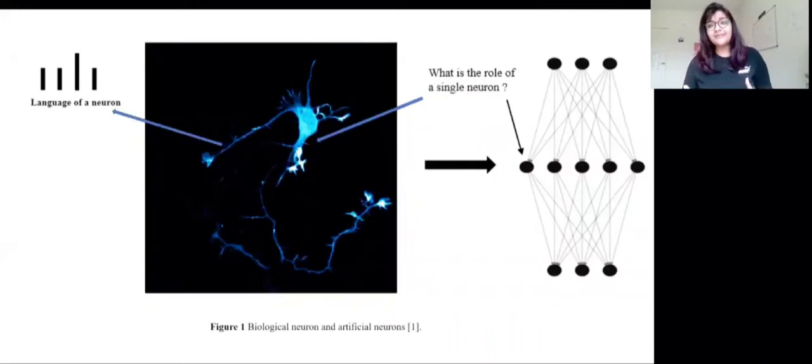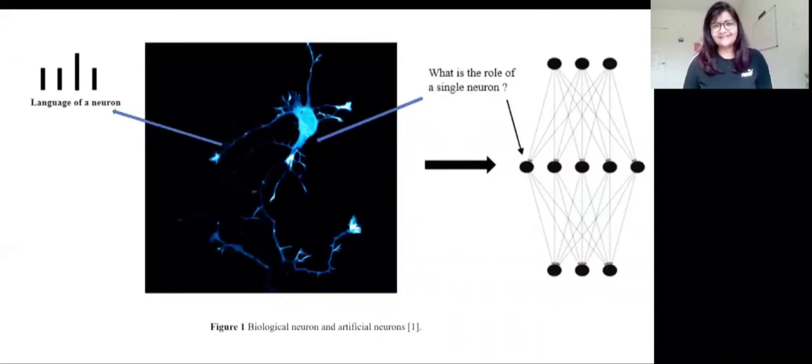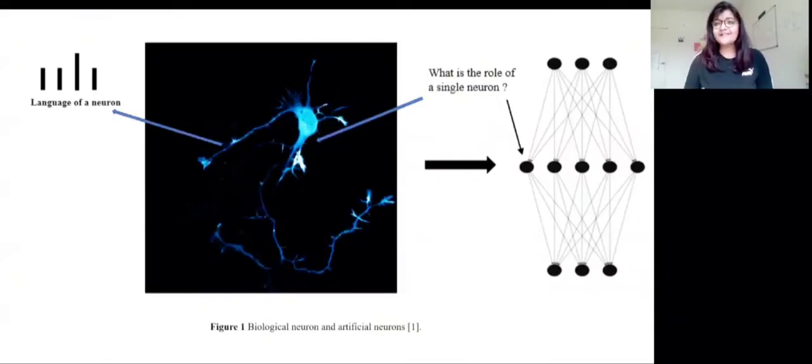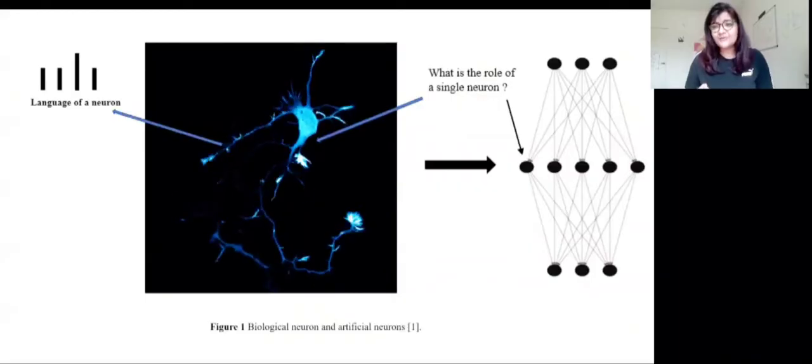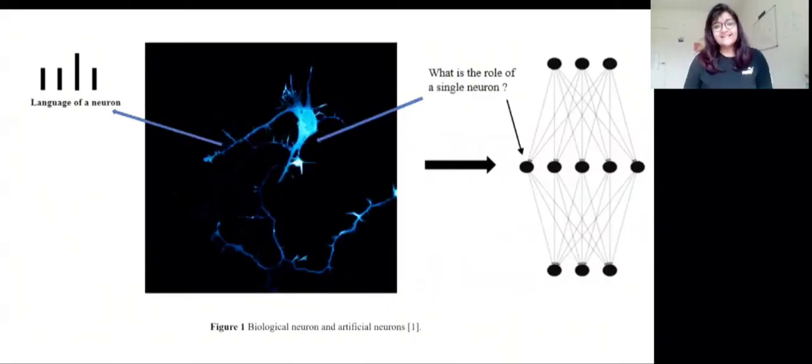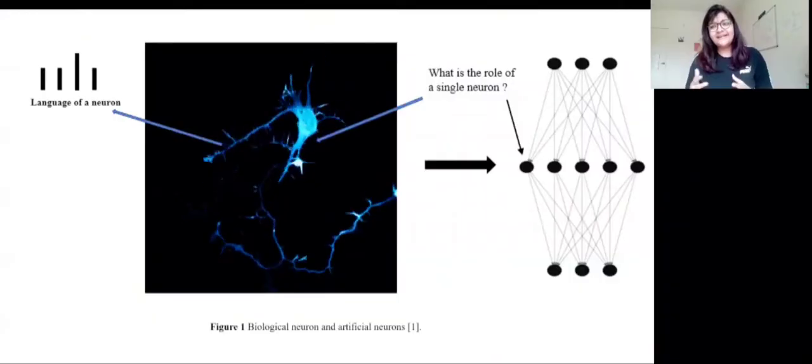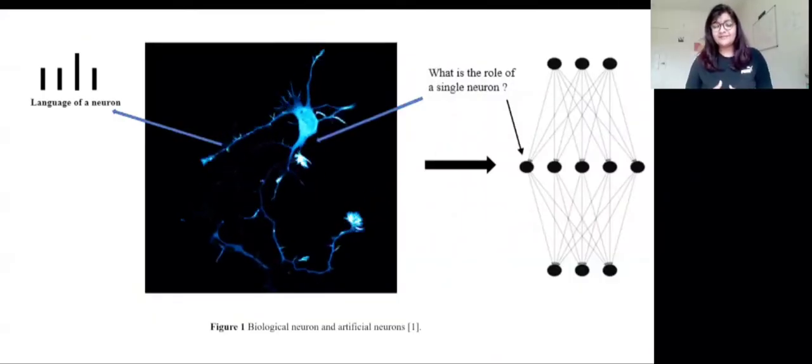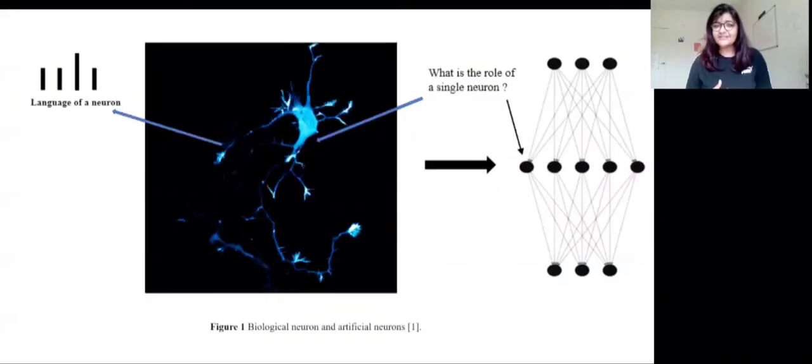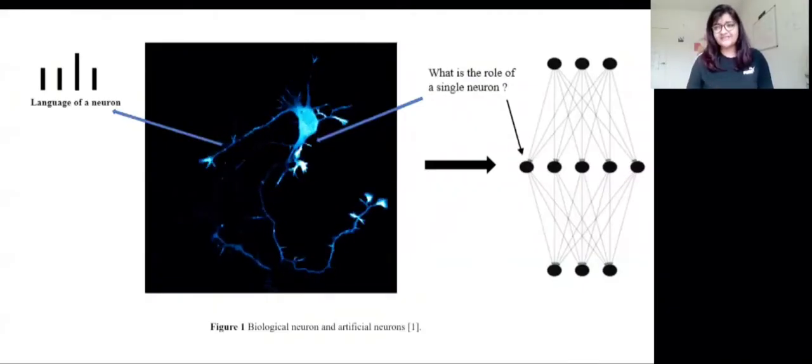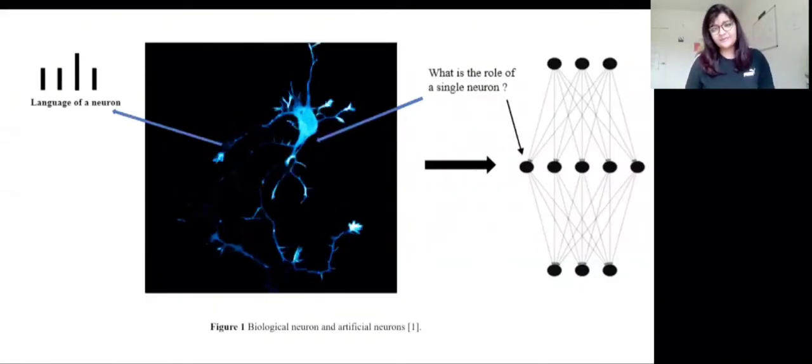We are somehow trying to replicate the human brain, its functionality, how it's communicating and doing computationally challenged works in a fraction of seconds without our prior knowledge. We can pick any neural network model—whether it's identification, classification, or decision making—these are all inspired from human brain.